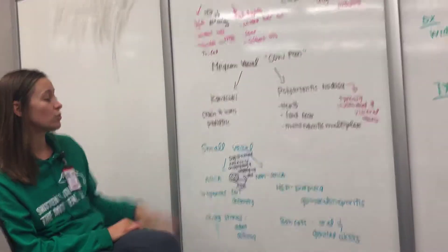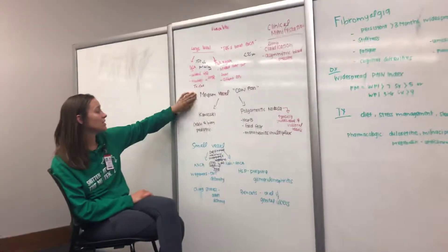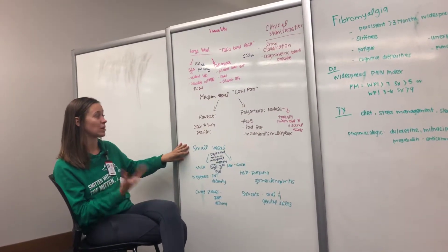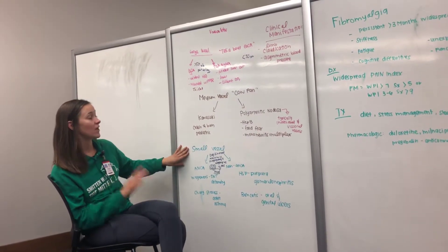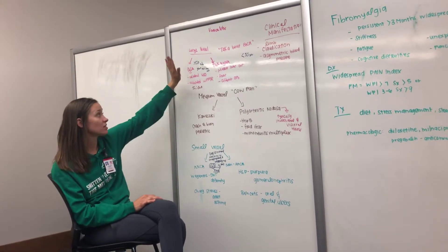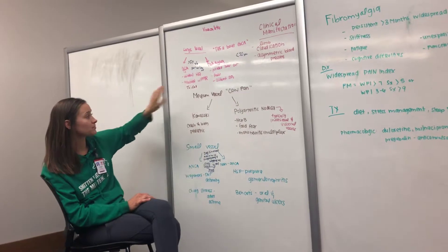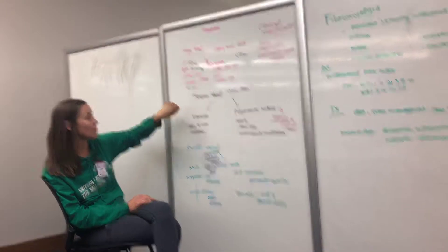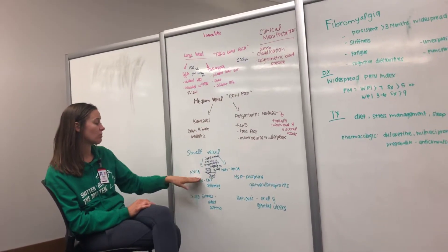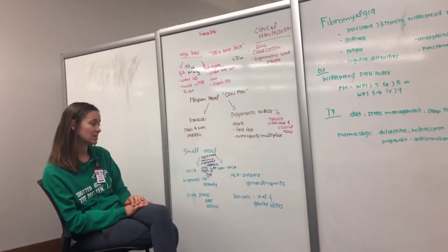To conclude, we have large vessel, medium vessel, and small vessel vasculitis — which is inflammation of vasculature throughout the body. Large vessel: remember GCA (temporal arteritis) and Takayasu. Medium vessel: cowpan — Kawasaki and polyarteritis nodosa. Small vessel: remember the ANCA-positive conditions (Wegener's, Churg-Strauss) and non-ANCA conditions (HSP, Behçet's).